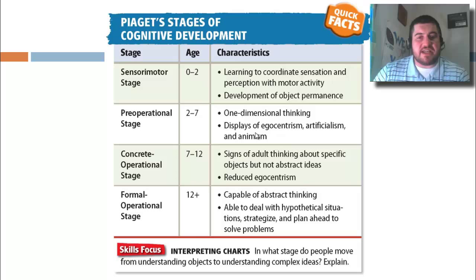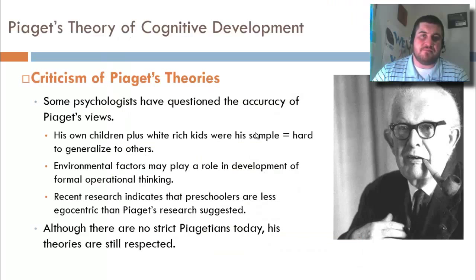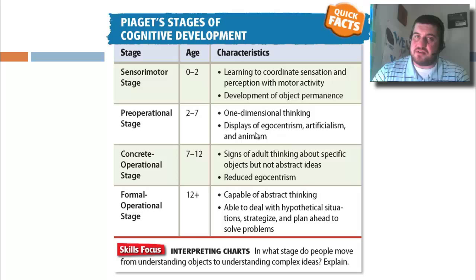Here are all four stages in a chart: sensorimotor at 0 to 2, pre-operational at 2 to 7, concrete operational at 7 to 12, and formal operational at 12 and up. I would recommend knowing the ages and the characteristics of each stage.